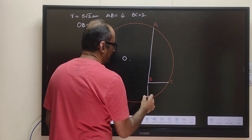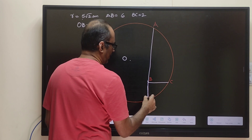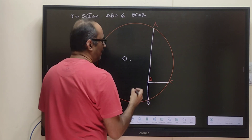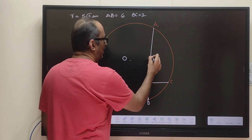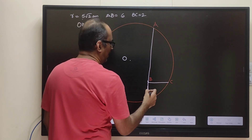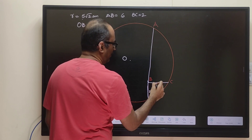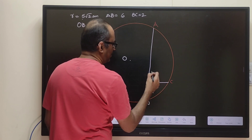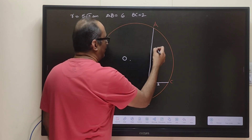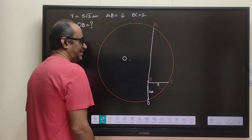What we will do is extend AB so that it will become a chord AD, and we'll try to divide that into two equal parts by drawing a perpendicular from O.